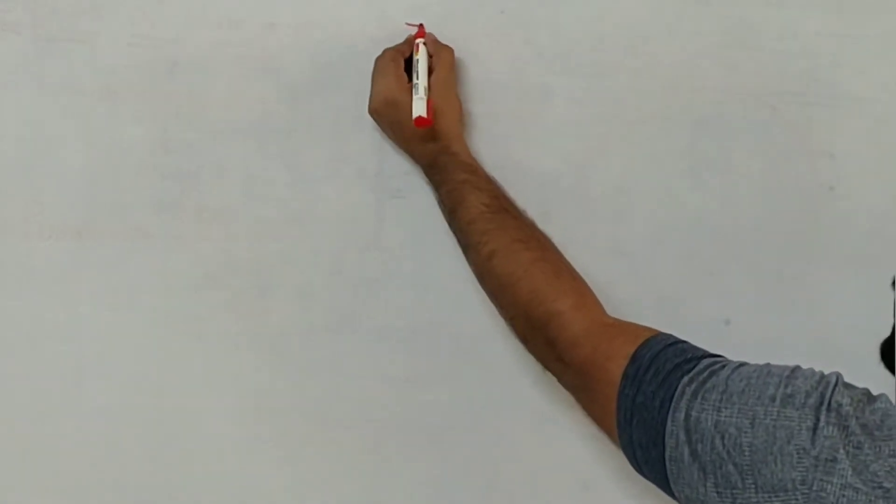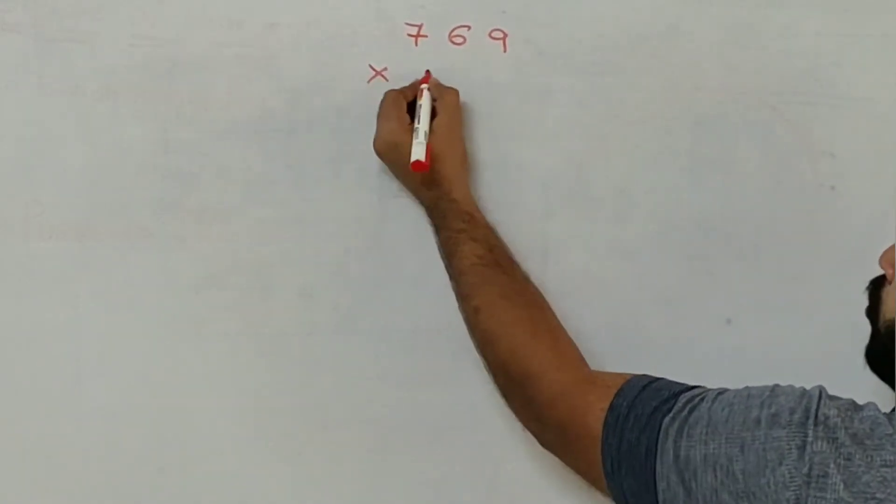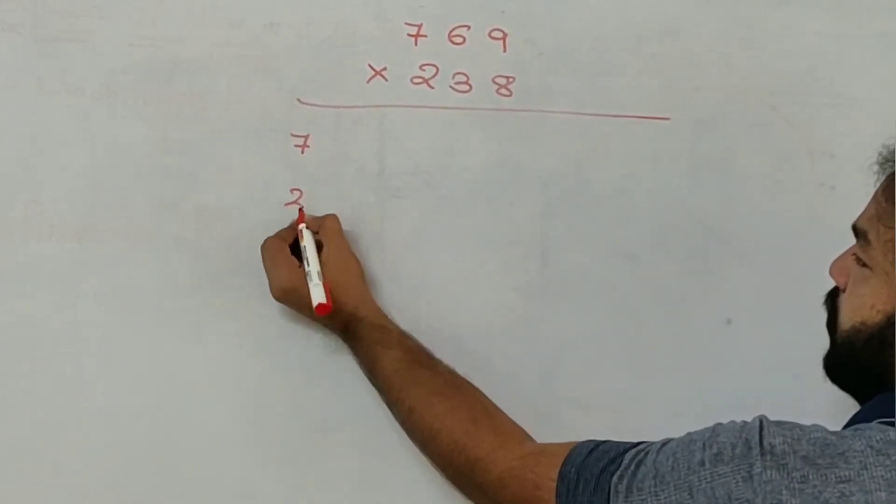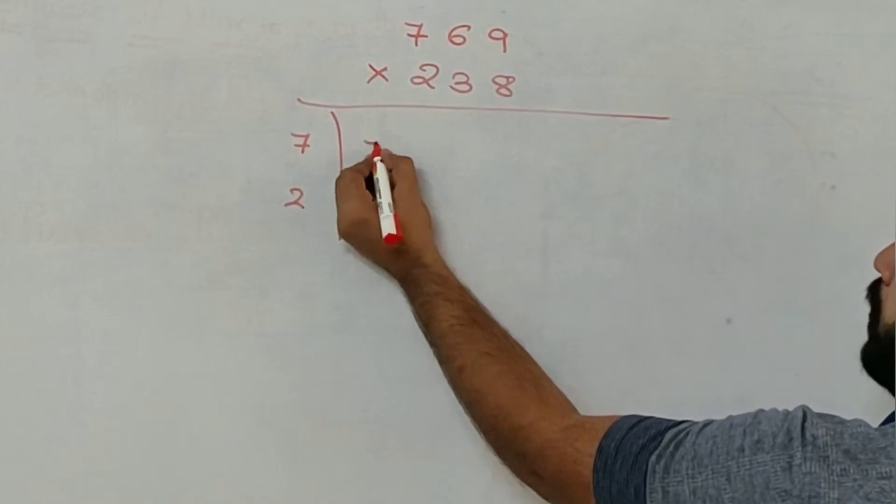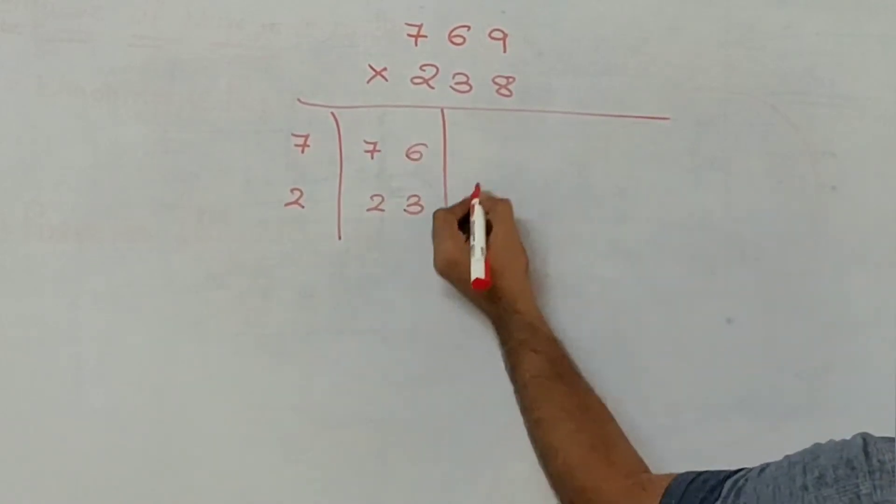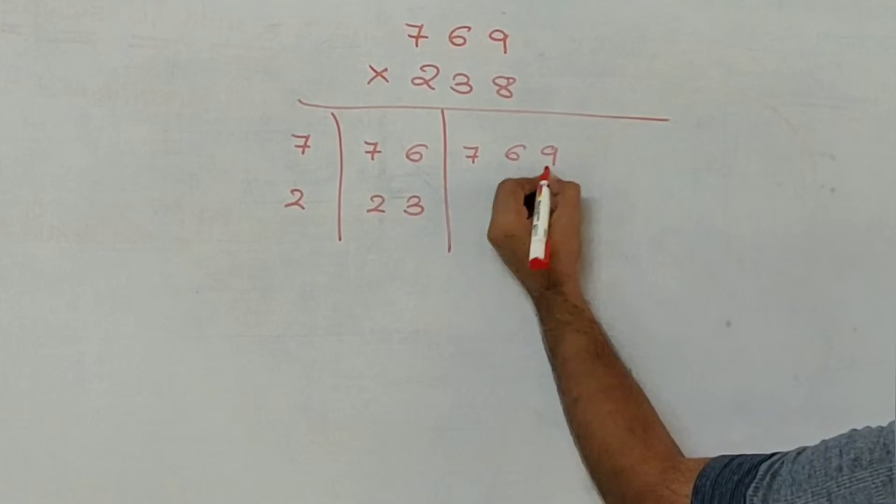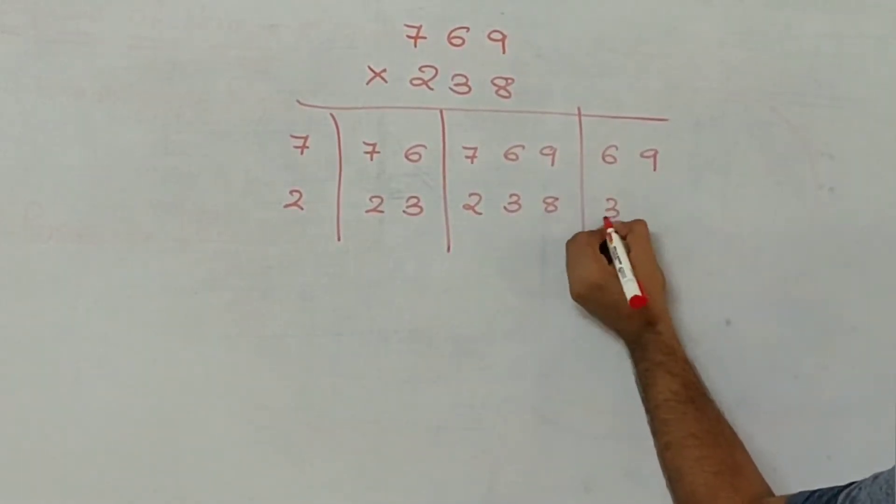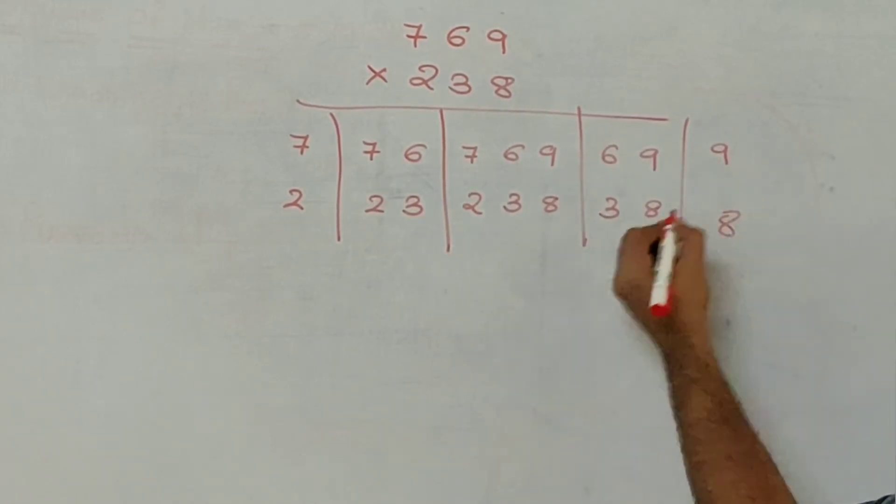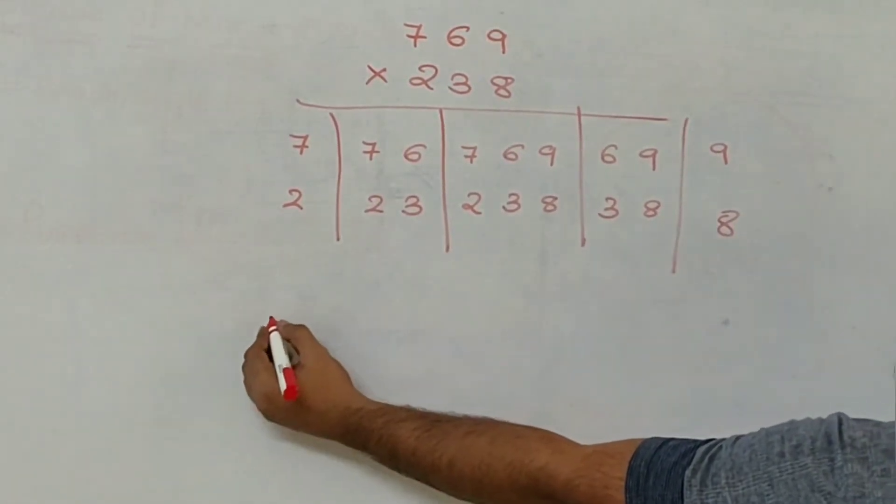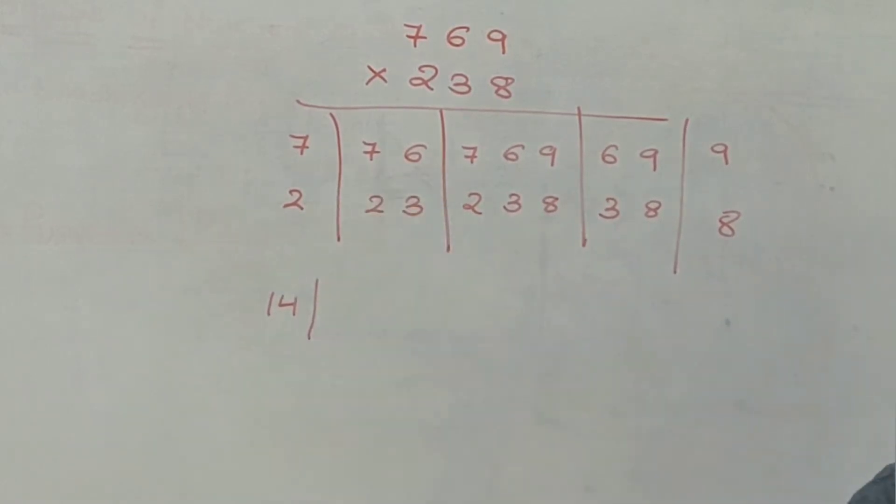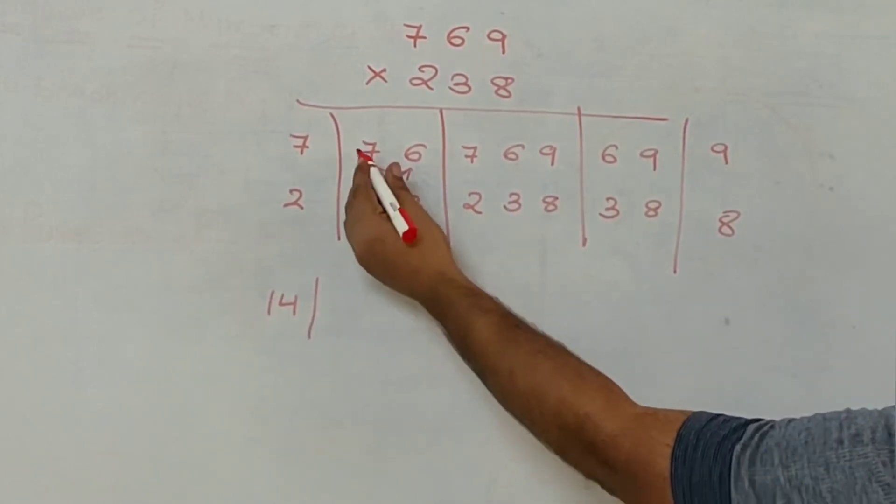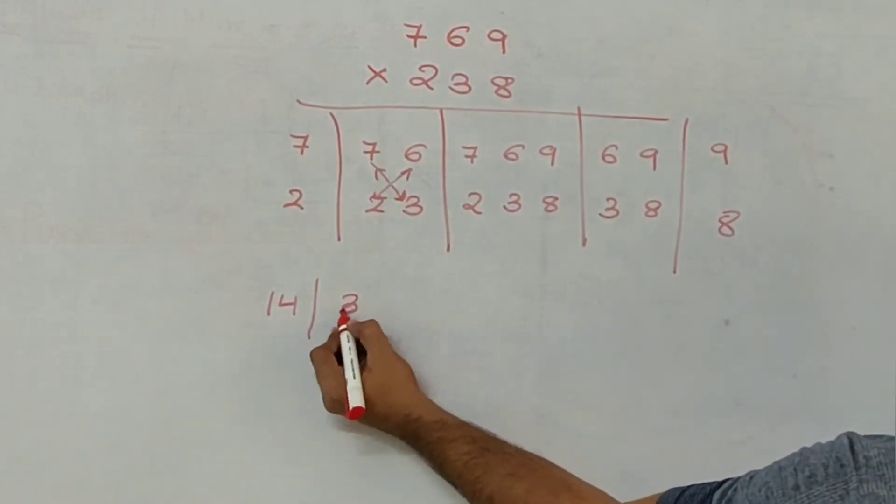Let us see another example which is 769 into 238. So as in last question, 7 and 2 will be the first group. Then come 7, 6, 2, 3. So my first group will have 7 into 2 which is 14. This will have 7 into 3 and 6 into 2 which makes it 21 plus 12, 33.